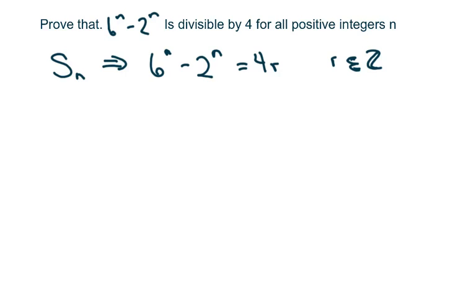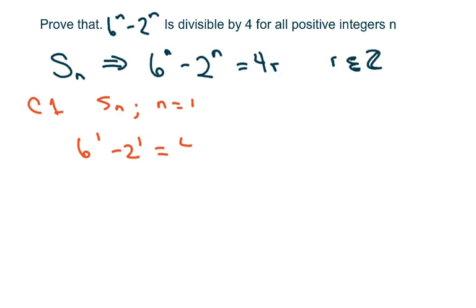The first thing we're going to do is condition 1, and show that s of n is valid for n equals 1. So we plug that in — 6 to the first power minus 2 to the first power equals 4, and clearly 4 is divisible by 4.